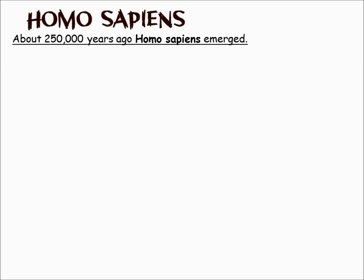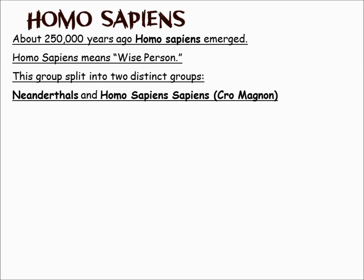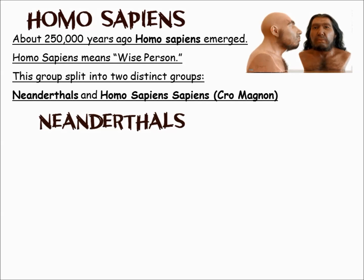Homo sapiens emerged about 250,000 years ago. Homo sapiens means 'wise person' or 'thinking man,' and this group is split into two very distinct groups: Neanderthals and Cro-Magnons, also called Homo sapiens sapiens, or modern humans. In terms of brain size they were very similar, but Cro-Magnons were probably superior.